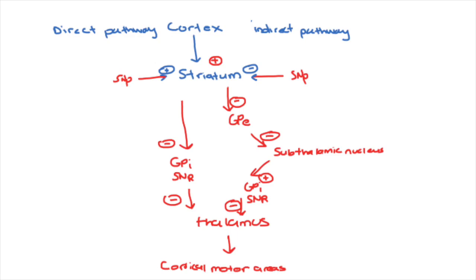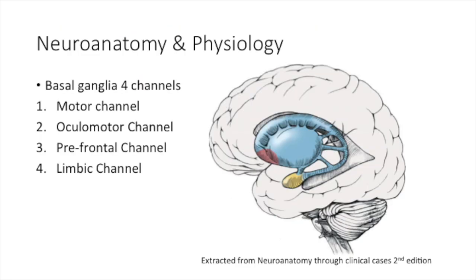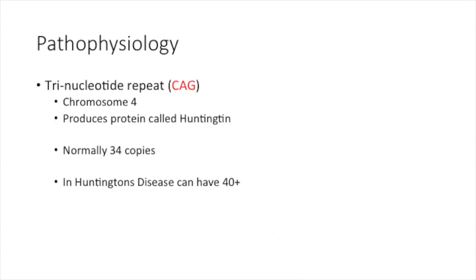As the disease progresses, movements get worse, starting from small movements in the hands and eventually spreading to the whole body. Neuroscientists believe that the basal ganglia has four different channels: one for body movement, one for eye movement, cognition, and emotion. By knowing this, it explains why a degeneration in the basal ganglia not only causes excess movement in Huntington's, but also causes cognitive issues as well as mood changes.